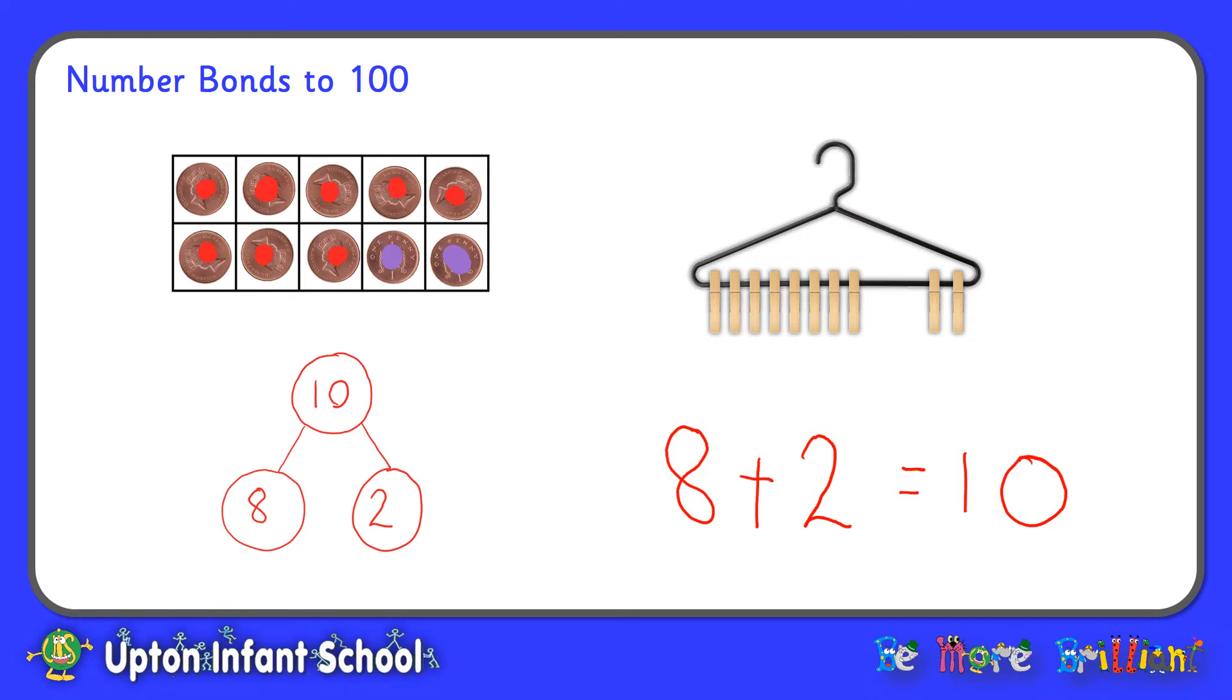So our first picture is a tens frame and you can use double-sided counters on your tens frame to show number bonds to 10. We've used our own homemade version here and we've used pennies which we have painted red dots on one side and purple dots on the other side to represent our number bonds, and you can clearly see that 8 red dots and 2 purple dots all together make 10.